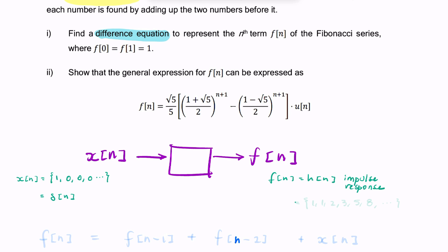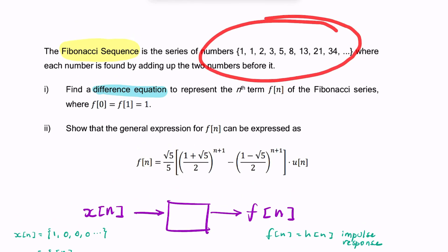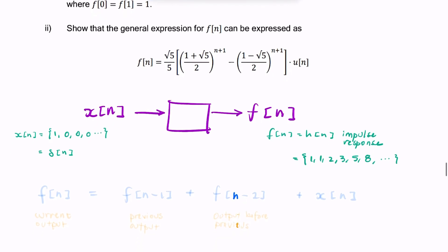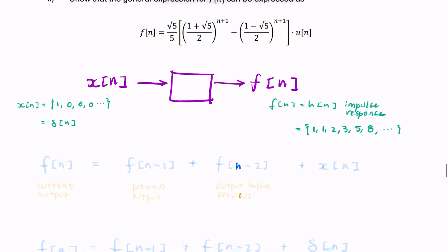The output should look something like what we're given in the question: 1, 1, 2, 3, 5, 8, etc. And the question is asking for an expression for F of n — a difference equation — so F of n in terms of previous values of F, specifically F of n minus 1 and F of n minus 2.